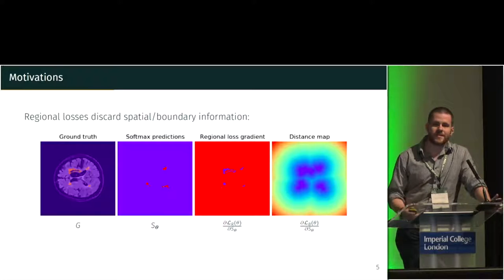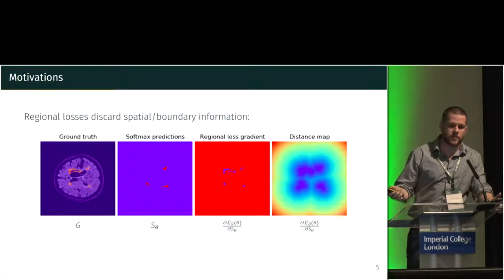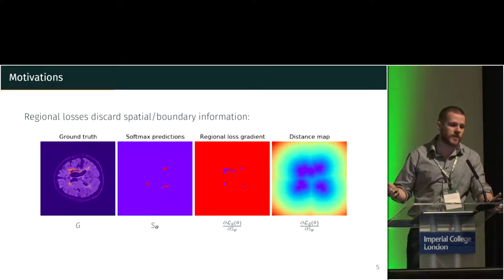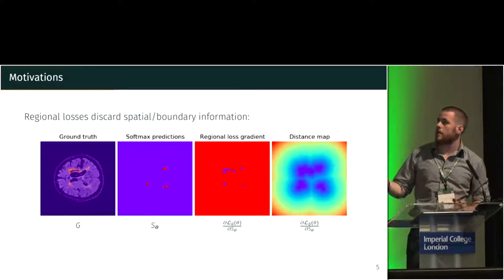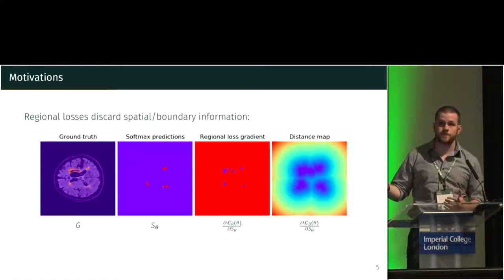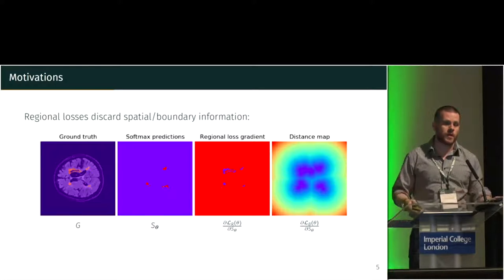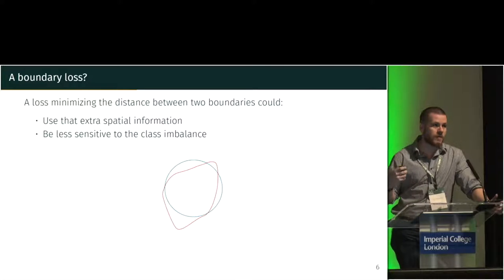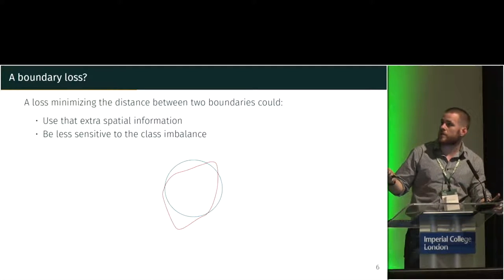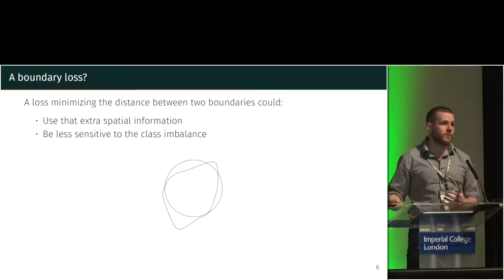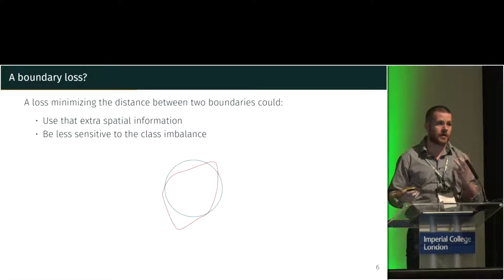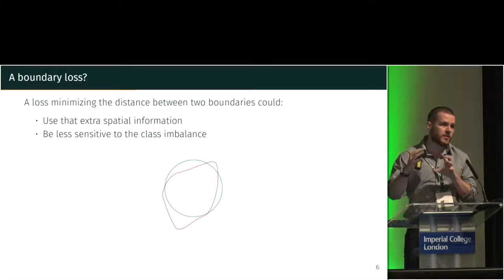Another issue with regional losses is that they tend to discard spatial and boundary information. If we plot the gradient of a regional loss with respect to the softmax prediction, we can notice that it doesn't take into account at all the distance to the boundary of our object. All this useful information already contained in the labels is discarded. We argue that having a loss that tries to minimize the distance between the ground truth boundary and the predicted boundary could use that extra information and also be less sensitive to class imbalance, because we are dealing with the interface between background and foreground rather than the regions themselves.